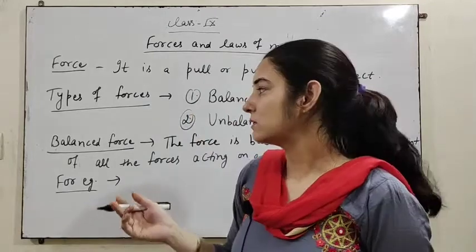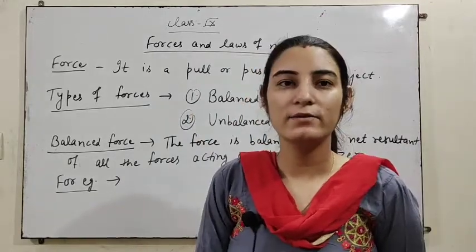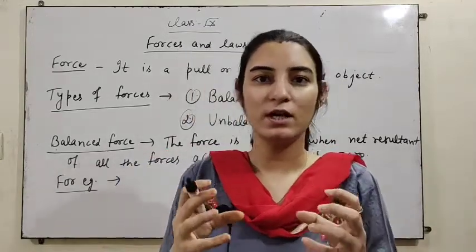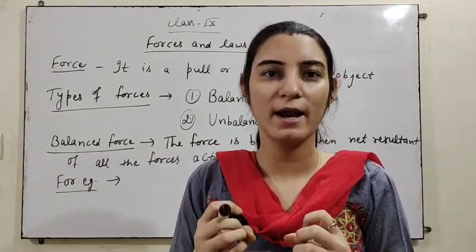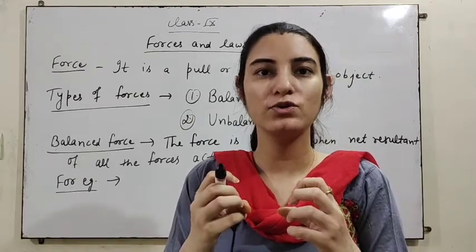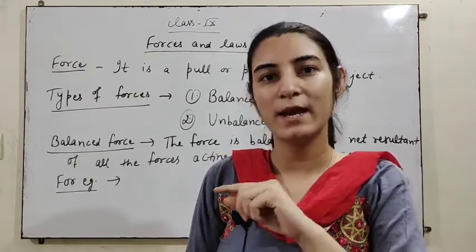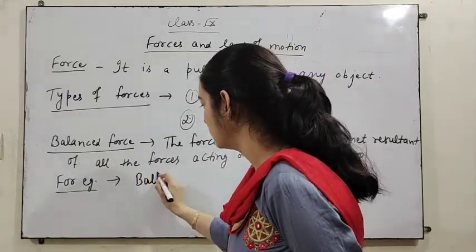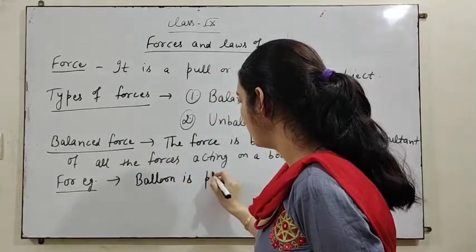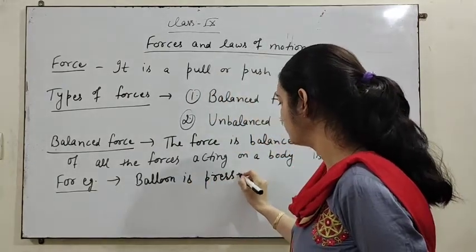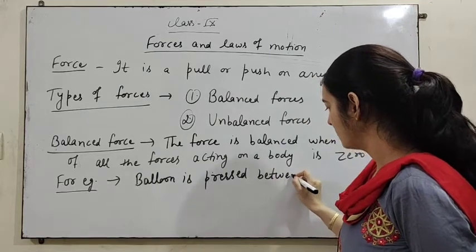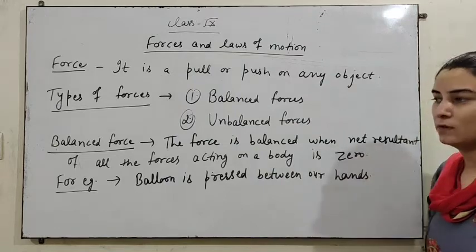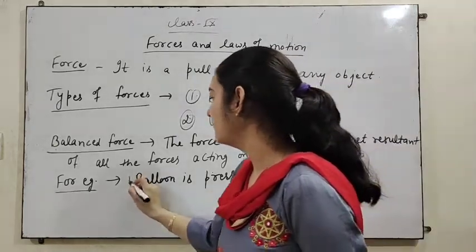For example, let us revisit the balloon example. When a balloon is pressed between our hands, the shape of the balloon changes due to this balanced force. The forces from both hands are equal and opposite, so the force is balanced.